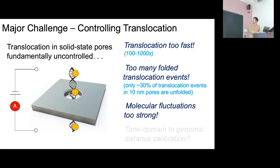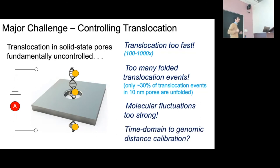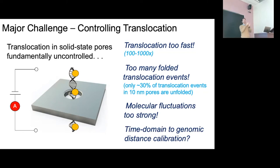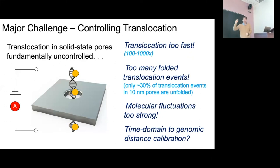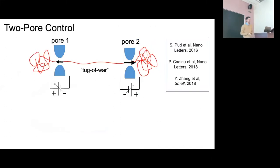There's also the problem of calibration. Pores give information in the time domain; I want to translate to the sequence domain. I need to measure translocation velocity. I could put reference sequences at known probe locations and measure times between probes, but you can't assume translocation velocity is the same for molecules of different sizes — there's tension propagation physics giving variable velocity. Moreover, I'm looking at fragmented gigabase-pair genomes with many different sizes. I need in-situ calibration for every molecule.